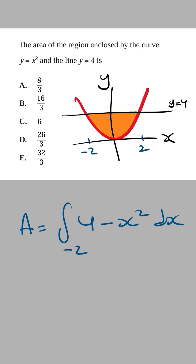Which means the bottom limit is minus 2 and the upper limit is 2. From here it's easy, you just chuck this into the calculator and evaluate this integral. And when you do, you're going to get 32 over 3, which is option E.